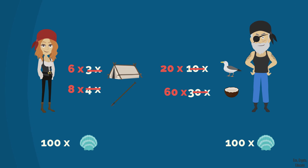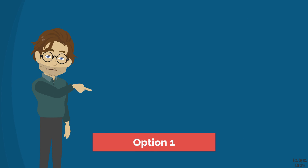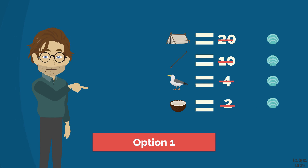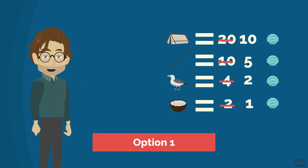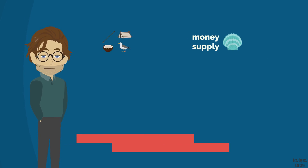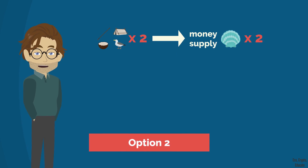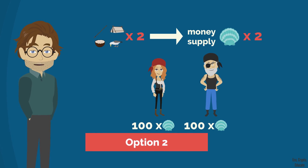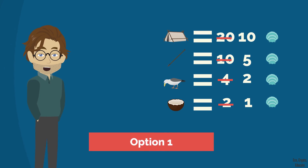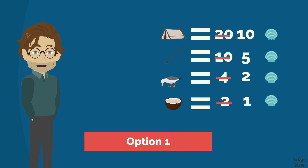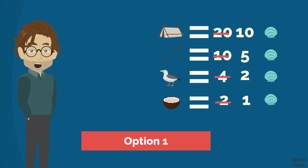Back to our monetary problem, our two friends will then have only two options. Option 1: they keep the same money supply being exchanged between them, and in such case they simply divide all the prices by two. Considering that everything costs half as much, Anna and Barry again have enough money to continue exchanging their increased production. Option 2: they use two times more shells to find a balance between the new number of things produced and the new amount of money in circulation.